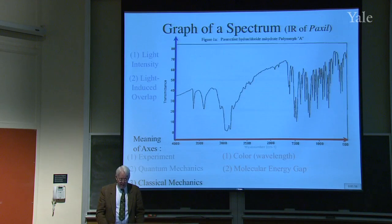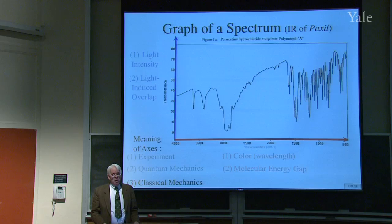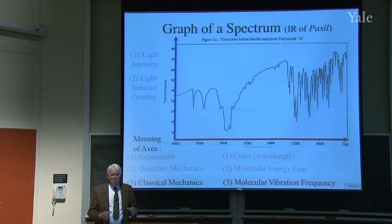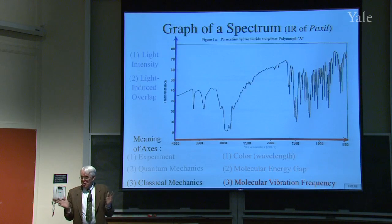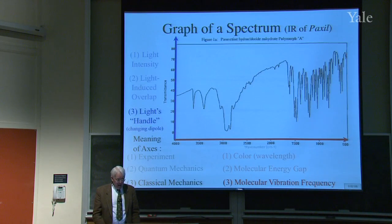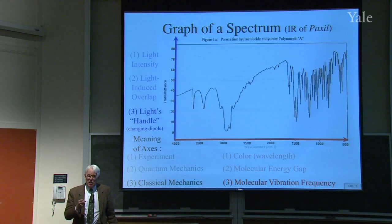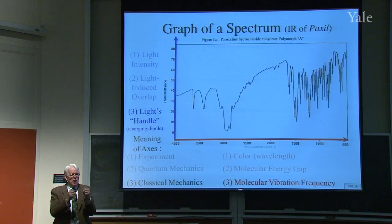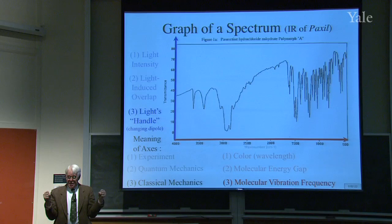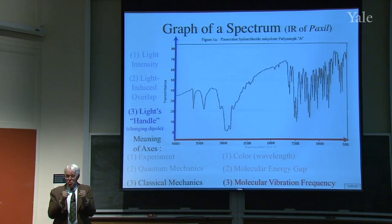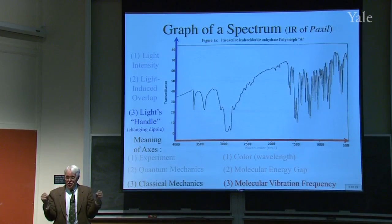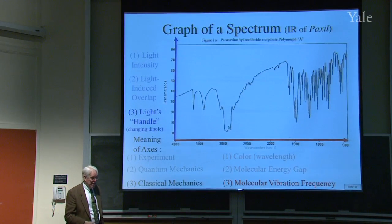In classical mechanics terms — which is how we usually talk about infrared spectroscopy — the horizontal axis is the actual vibration frequency of the atoms in the molecule, and the vertical axis is how much handle the light has on that particular vibration. For example, vibrating H₂ doesn't change any dipole, so it doesn't interact with light. But vibrating HCl creates a large separation of positive and negative charge, and it does interact with light.